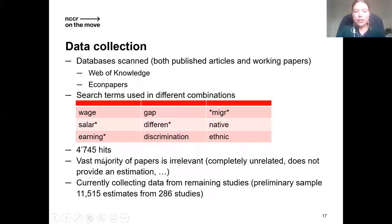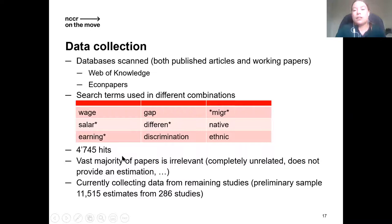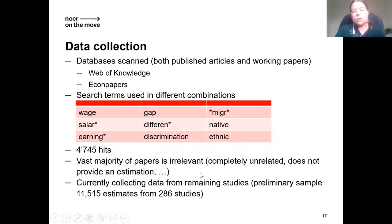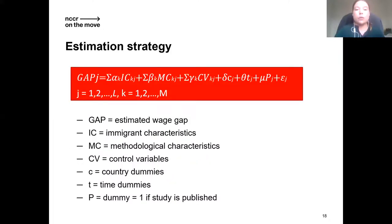Luckily, the vast majority of these papers appear to be irrelevant — somehow, a lot of papers on migratory salmon come up with these search terms. Some papers seemed relevant at first glance but on closer inspection were simply descriptive and did not estimate anything. We are currently collecting data from the remaining relevant studies. What I will show you is some very first findings from a preliminary subsample of 11,515 estimates from 286 studies — so keep in mind it's not the full data yet.